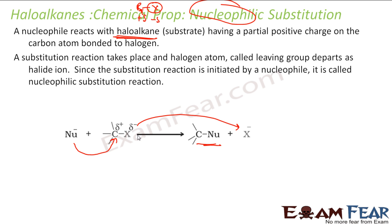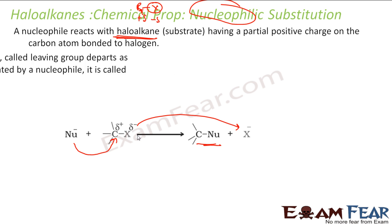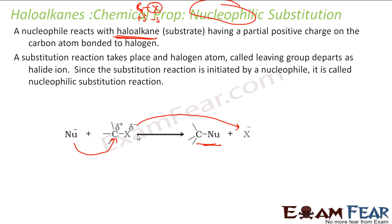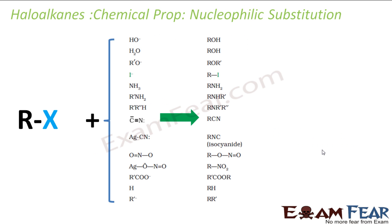This is a typical nucleophilic substitution reaction because you are substituting the halogen with a nucleophile. It is called nucleophilic because the attack is initiated by a nucleophile. The leaving group is the halide ion.